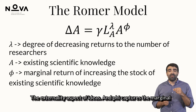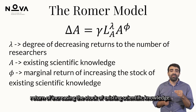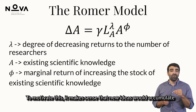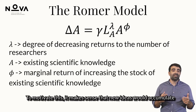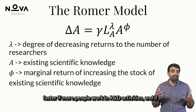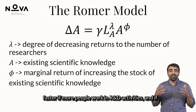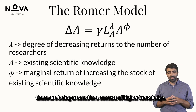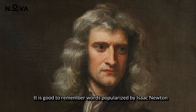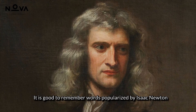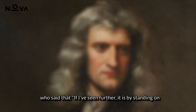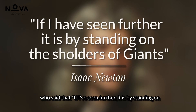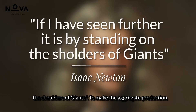Phi captures the marginal return of increasing the stock of existing scientific knowledge. To motivate these, it makes sense that new ideas will accumulate faster if more people work in R&D activities, and if these are being created in a context of higher knowledge. It is good to remember words popularized by Isaac Newton, who said that if I have seen further, it is by standing on the shoulders of giants.